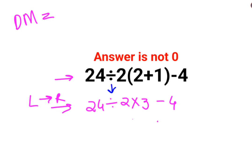So first we'll do 24 divided by 2, which is 12, multiplied by 3 minus 4. 12 multiplied by 3 is 36 minus 4. The answer for this question is supposed to be 32.